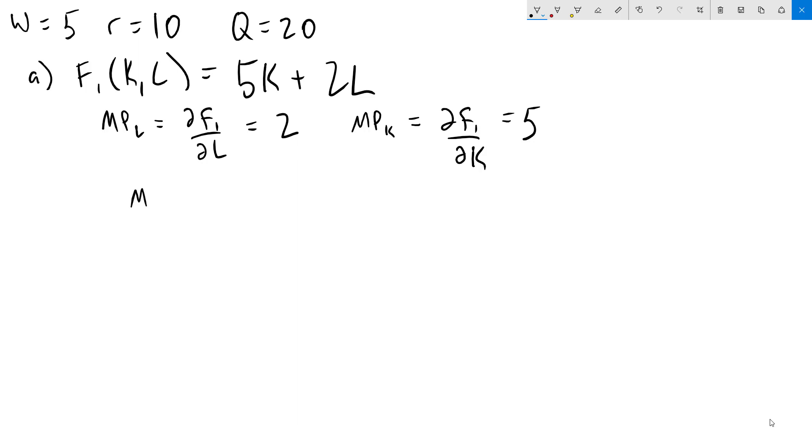We can figure out what is our marginal product of labor per dollar by dividing that by the wage. So we get 2 fifths. Doing the same thing for capital, the marginal product of capital per dollar is 5 tenths. Converting those to decimal, we get 0.4 and 0.5. We can see that the marginal product of capital per dollar is always going to be higher than the marginal product of labor per dollar, so there's no reason we would ever want to use labor here.